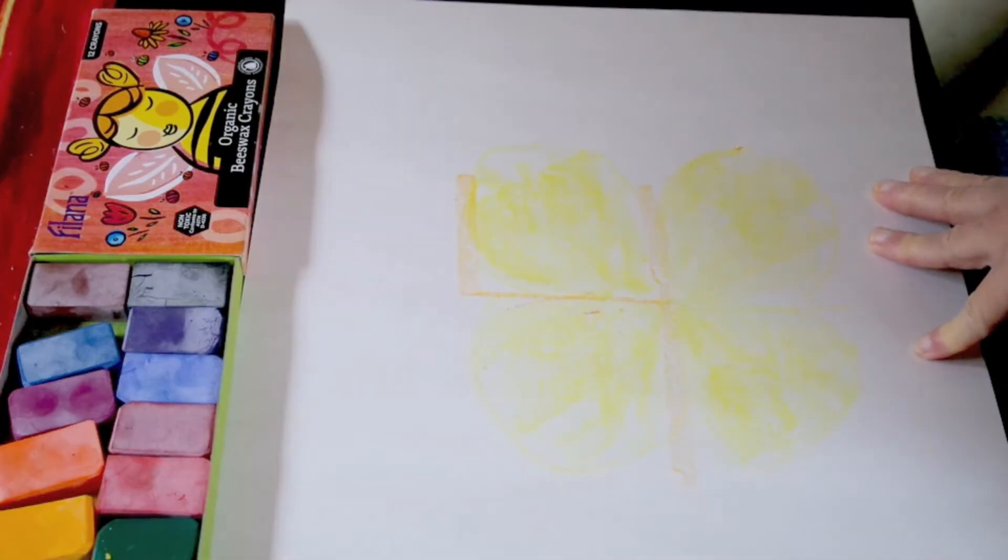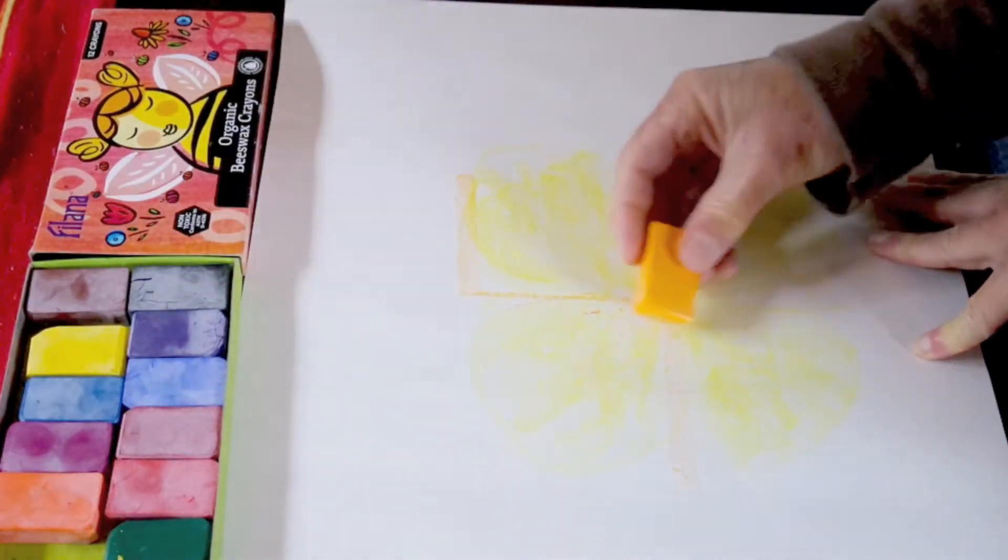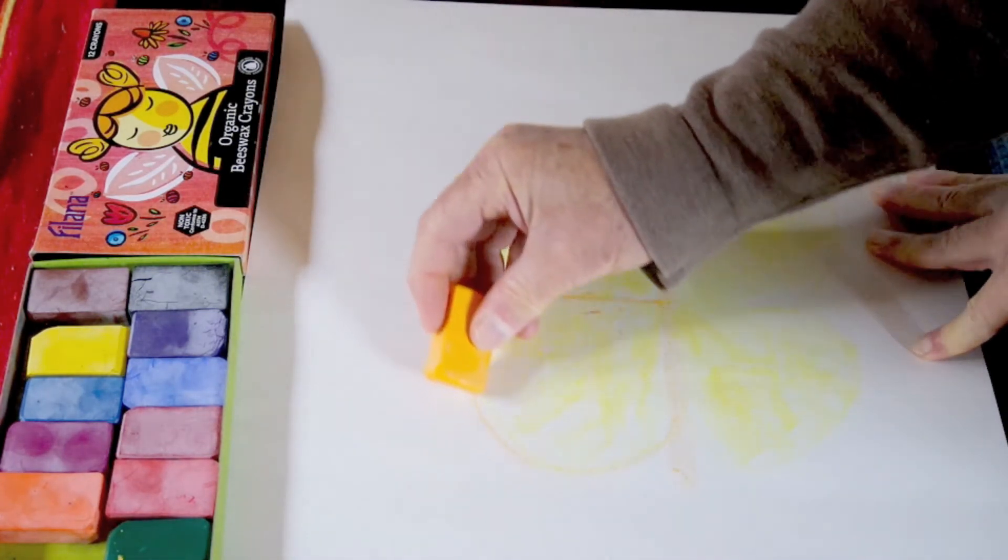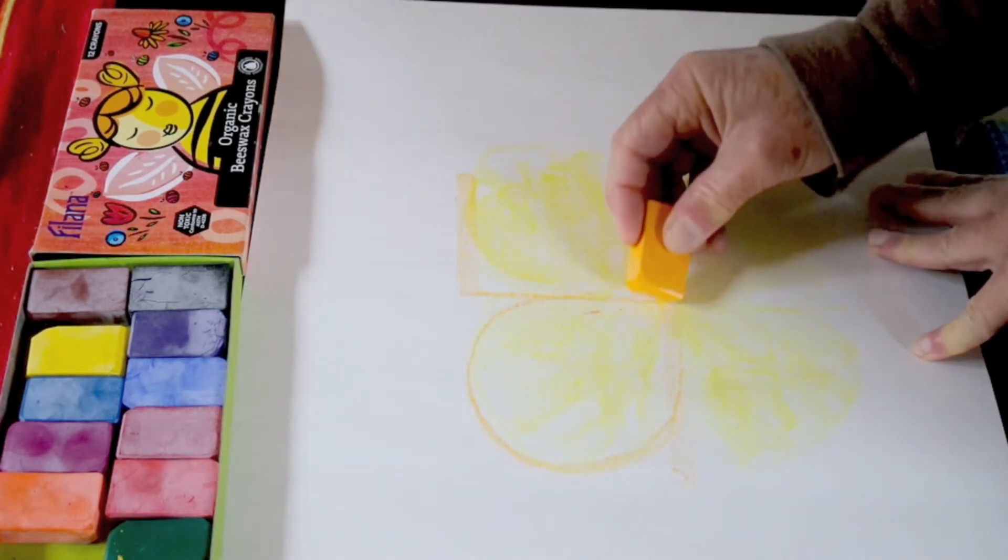When you have those all colored in, take a darker yellow to trace around the curved part of the petal. Don't worry about those straight lines - we're going to hide those later in the sepals.